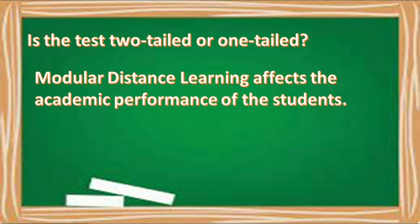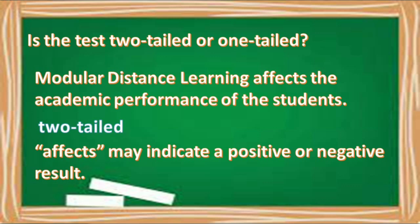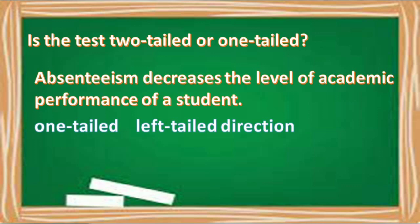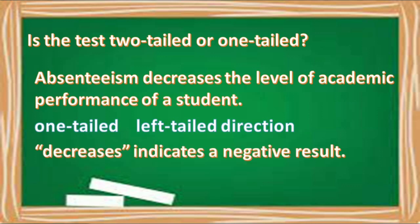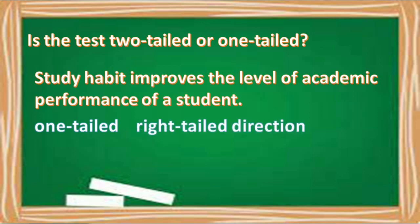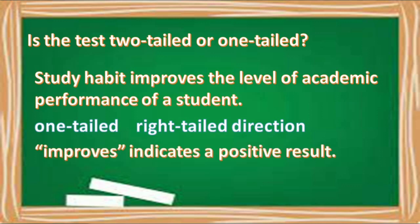Let's determine if the given tests describe a two-tailed or one-tailed test. First: modular distance learning affects the academic performance of students — this is two-tailed because 'affects' may indicate a positive or negative result. Second: absenteeism decreases the level of academic performance of a student — this is one-tailed, specifically left-tailed, because 'decreases' indicates a negative result. Third: study habit improves the level of academic performance of a student — this is one-tailed, specifically right-tailed, because 'improves' indicates a positive result.